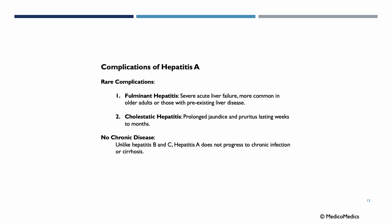Potential complications of Hepatitis A include rare fulminant hepatitis — severe acute liver failure — more common in older adults or those with pre-existing liver disease. Cholestatic hepatitis involves prolonged jaundice and pruritus lasting weeks to months. However, there is no chronic disease: unlike Hepatitis B and C, Hepatitis A does not progress to chronic infection or cirrhosis.